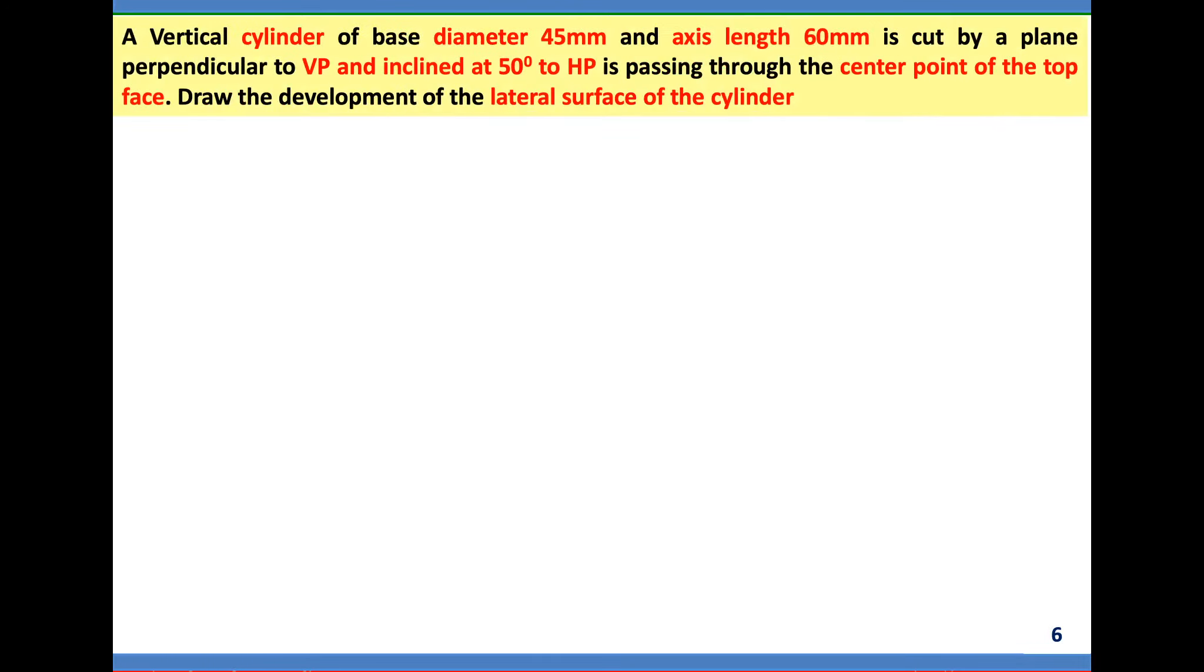We'll solve a problem. A vertical cylinder of base diameter 45mm and axis length 60mm is cut by a plane perpendicular to VP and inclined at 50 degrees to HP, passing through the center point of the top face. Draw the development of the lateral surface of the cylinder.